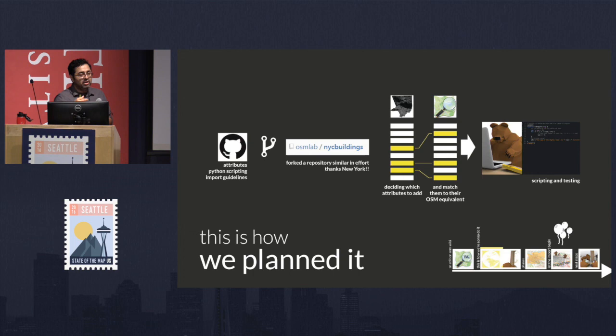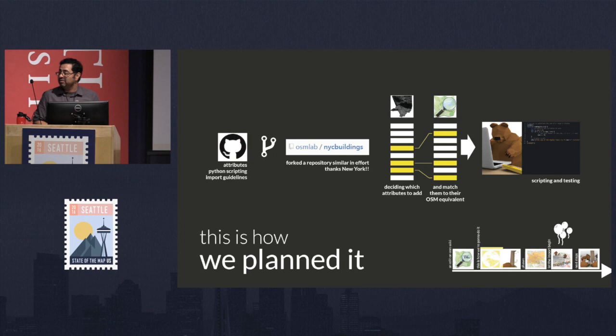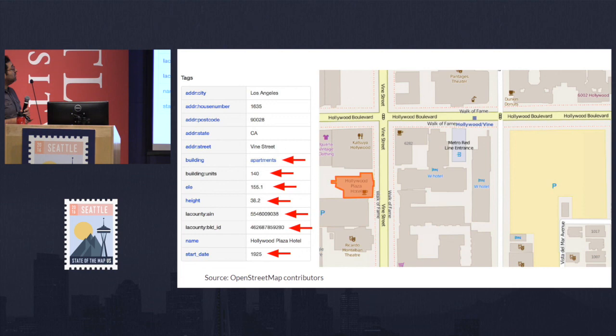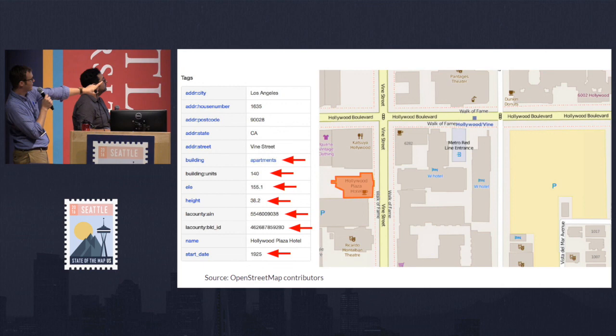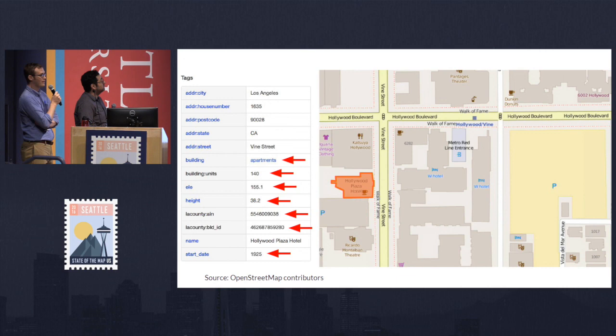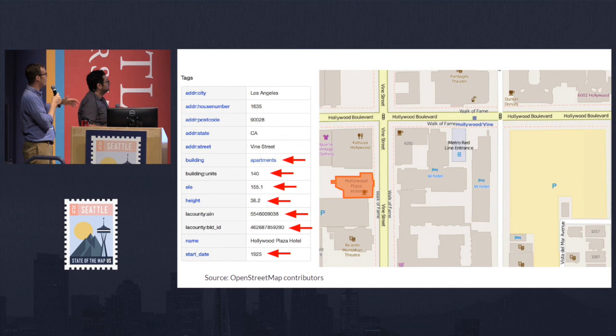We had to decide what attributes to add, because we had about 50 columns of attributes — like should we add swimming pool? — and then try to match each to the OSM equivalent. We did some scripting and testing. This is the famous Hollywood and Vine intersection. A particular apartment building came through with different information — all the red arrows point to things that came through the import. It came through with building equals apartment, building units equals 140, elevation 155, height 38 — all in meters — plus the AIN, which is the assessor information number for the county assessor, the building ID number, and it was built in 1925.